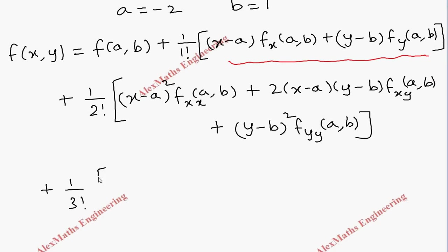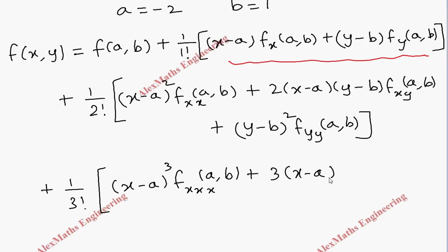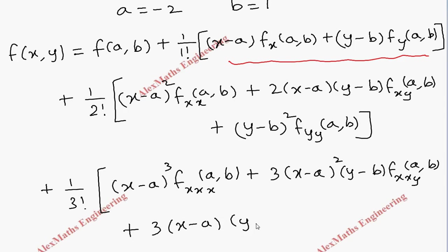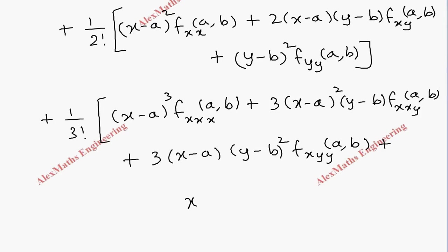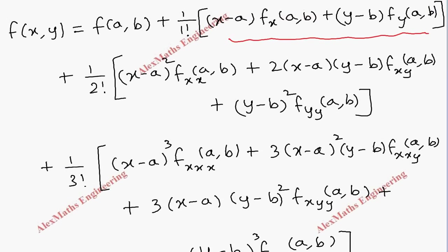In the same way, the third-order part is written as the (a+b)³ expansion: (1/3!) times [(x-a)³·fxxx(a,b) + 3(x-a)²(y-b)·fxxy(a,b) + 3(x-a)(y-b)²·fxyy(a,b) + (y-b)³·fyyy(a,b)]. That completes the Taylor series formula.